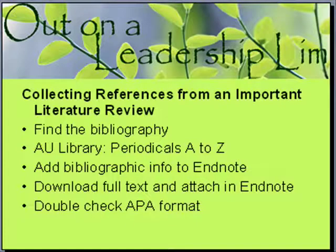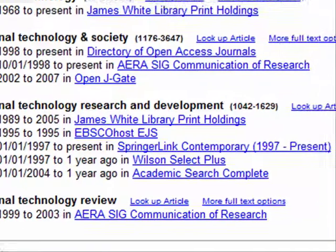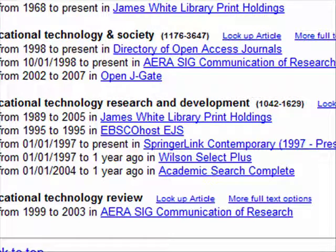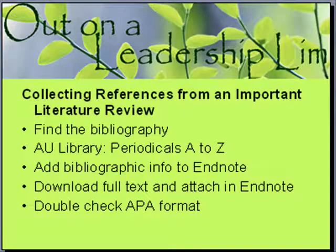So that is Periodicals A to Z. One of the things that's challenging is figuring out which of those databases to use — I've spent a lot of time hunting around trying to figure out which one to get it from. It's a little bit of a goose chase, but the more you do this, the easier it will be. Again, you're going to use this when you already know the name of the journal and the article that you want to get, but you don't know which database has it. That's the reason to use Periodicals A to Z.